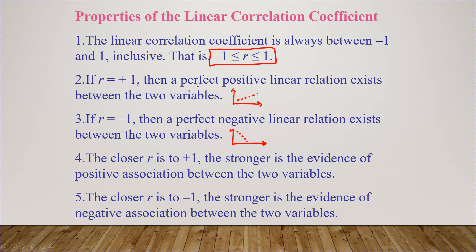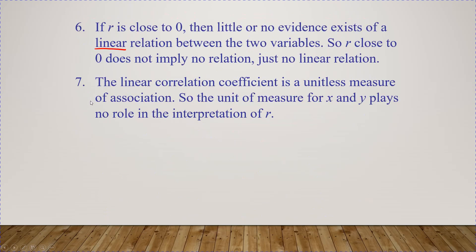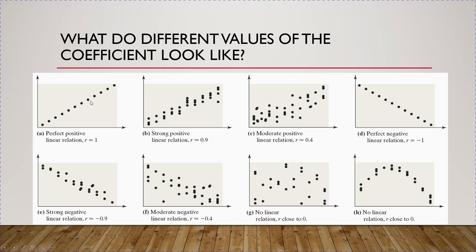To summarize: r is always between negative 1 and 1. Closer to 1 means a positive relationship; closer to negative 1 means a negative relationship. Let me show you some different r values in scatter plots.